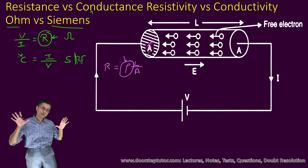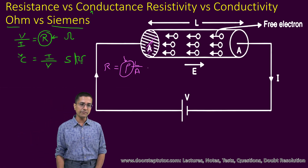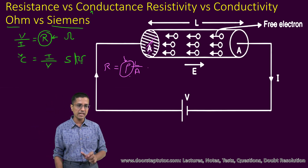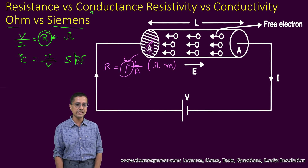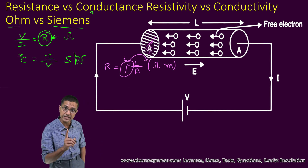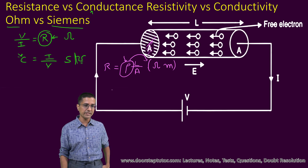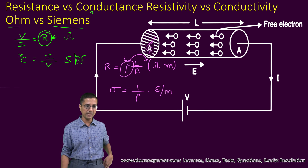The derivation for resistivity, which involves drift velocity, has already been shown on this channel. Resistivity is measured in units of ohm·meter — that is the unit of resistivity (rho), not resistance. The inverse of resistivity is denoted by the symbol sigma (σ) and is known as conductivity, given in units of Siemens per meter.